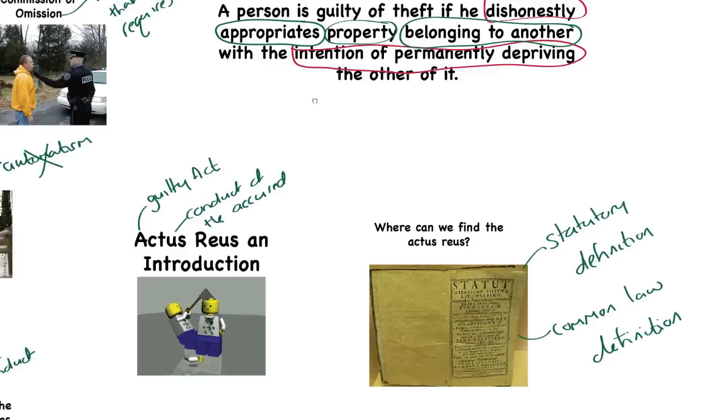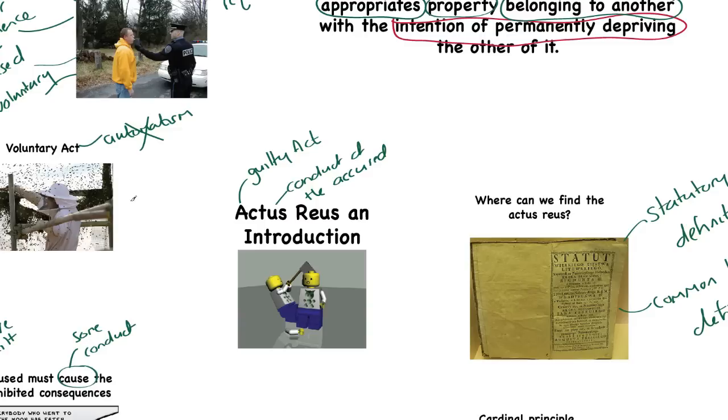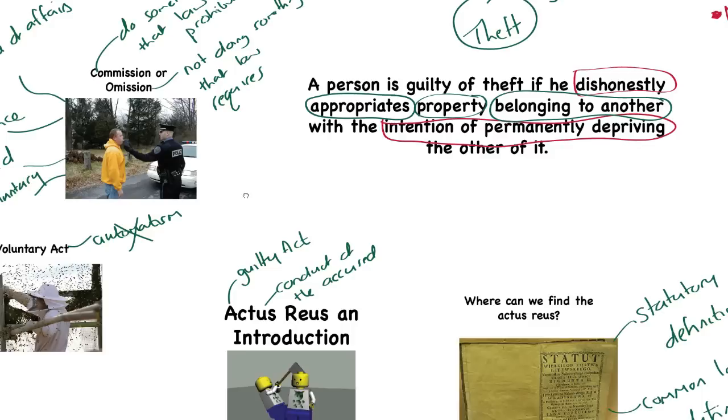That brings the introduction of actus reus to a close. What we're going to look at in the next video is omissions, those instances where we commit or complete the actus reus by not doing something that the law requires.